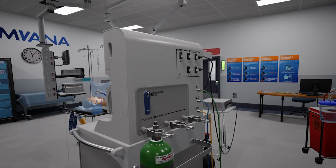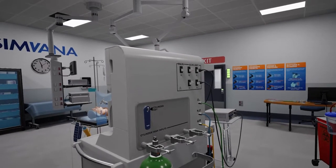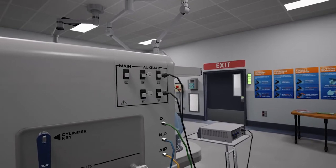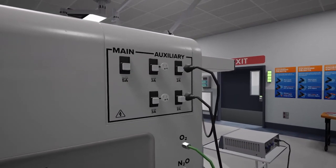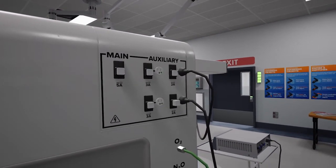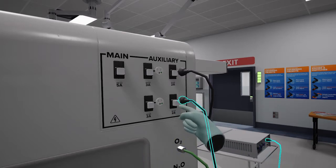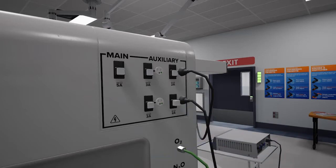We are looking at the back of the anesthesia machine and as you can see we have a case in progress, but what I would like you to look at is the auxiliary electrical outlets on the back of the machine here. One of the outlets, the circuit breaker, is tripped and I can't re-engage it.